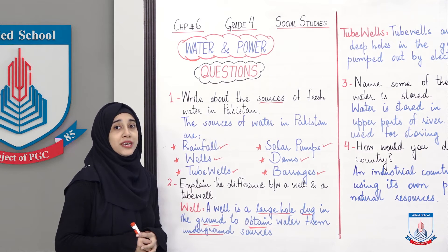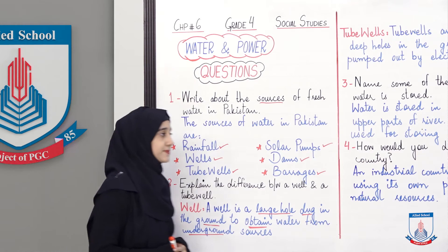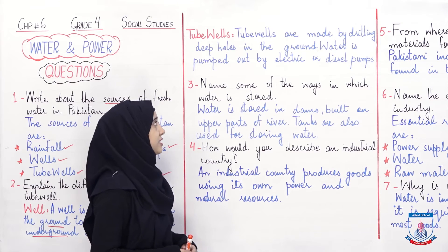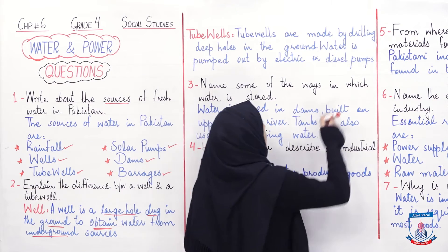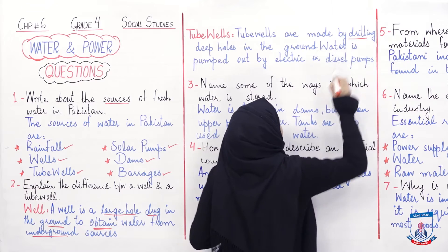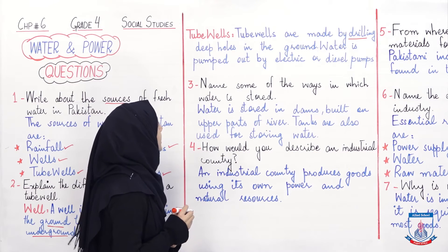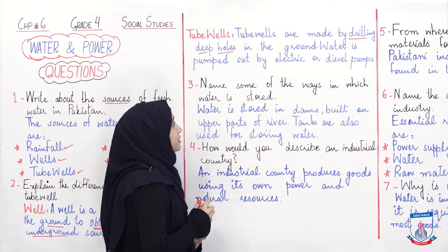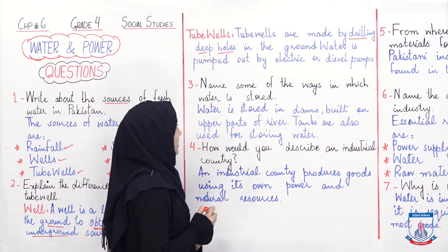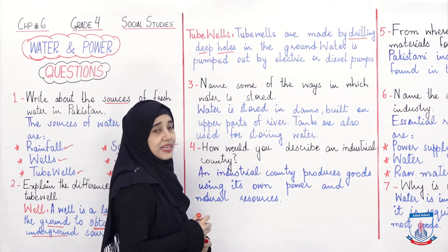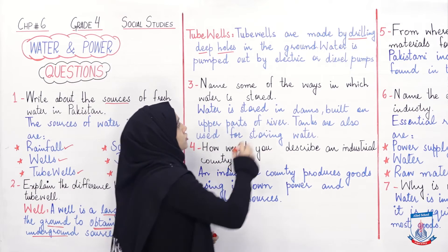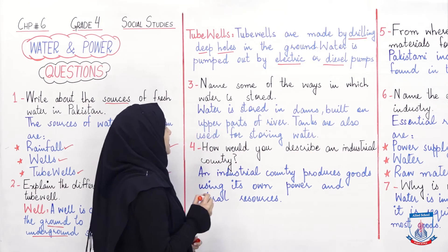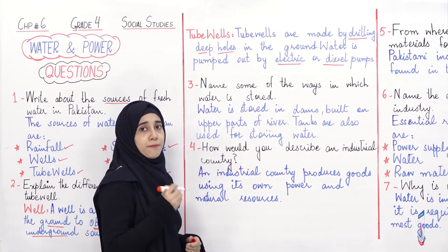Now, let's talk about what is a tube well. Tube wells are made by drilling deep holes in the ground. They are made by drilling — yani ke drill machine use karte huye holes kiye jate hain in the ground — deep, gehre holes in the ground. Water is pumped out by electric or diesel pumps. In ke liye pumps bhi required hote hain, joh ke normally ya toh electric hote hain ya diesel hote hain. Aur paani nikala jata hai with the help of these pumps.